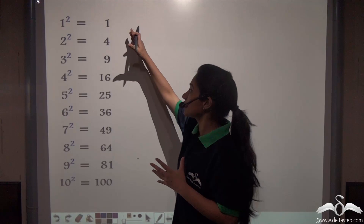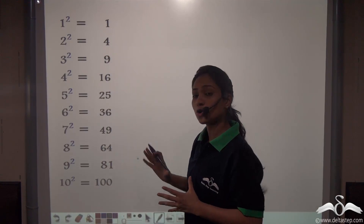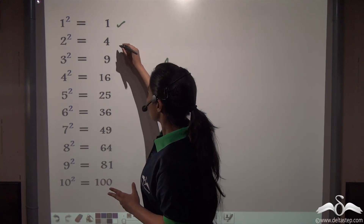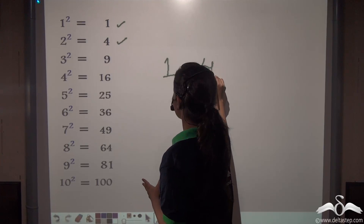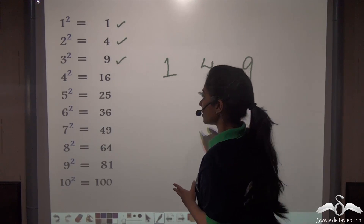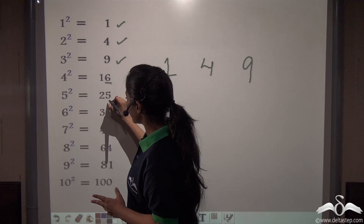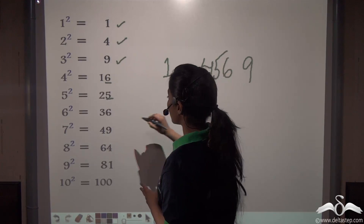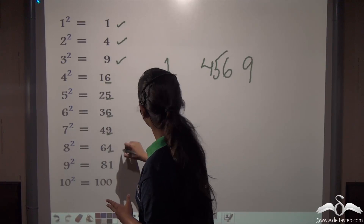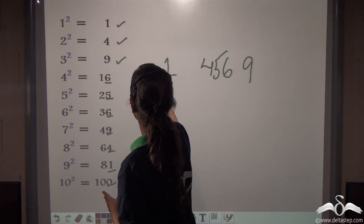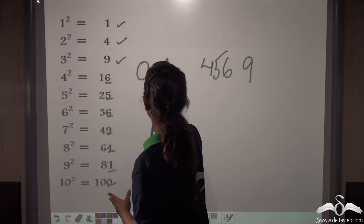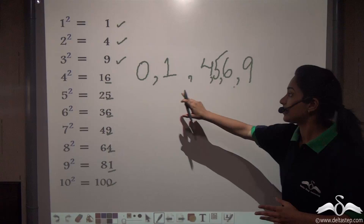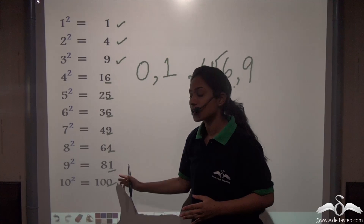Now look at the unit digits of these squares. We can see that 1 is present there, 4 is there, 9 is there, then look at the unit digits: 6, 5, again 6, then again 9, 4, 1, and 0. So only 0, 1, 4, 5, 6, and 9 — these are the unit digits present in these squares.